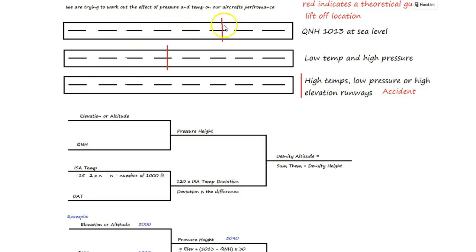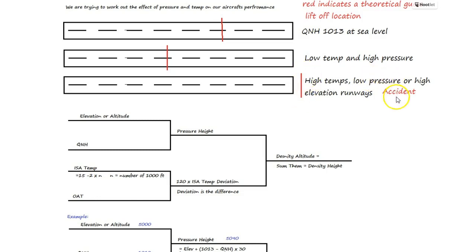Basically, theoretically, if that's your normal takeoff distance on a normal runway on a normal day at QNH 1013 at sea level, as we get low temperatures and high pressures our performance increases because the air is more dense, therefore we can get off sooner. Now here's the problem. On high temp days when there's low pressure and the air is less dense, or when you're taking off from high elevation runways because the air is less dense, or a combination of those, our takeoff performance can end up way out there and we can crash into trees and kill ourselves.